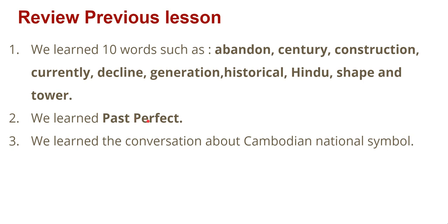We also learned the past perfect tense. Past perfect is a tense used to identify two actions that happened in the past. The action that happened first uses the past perfect, and the other uses the simple past.